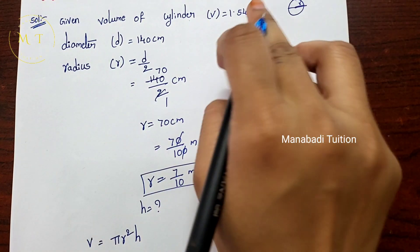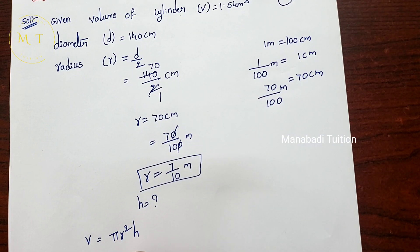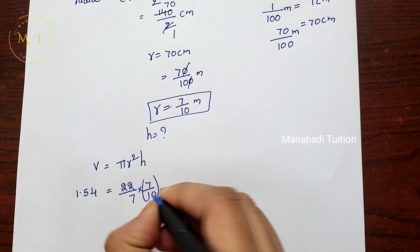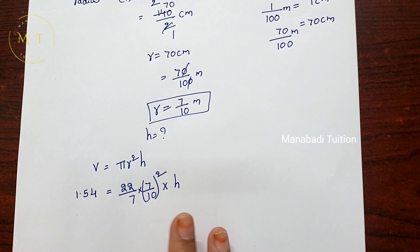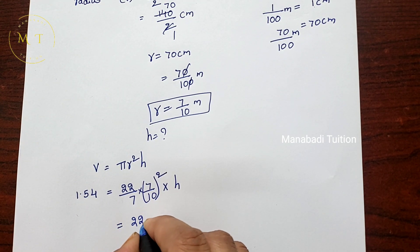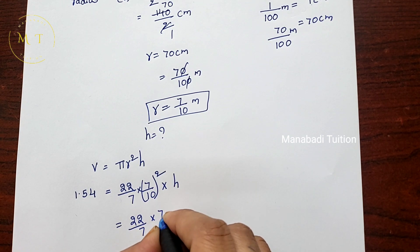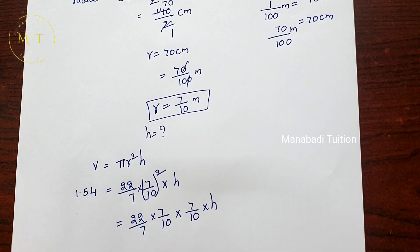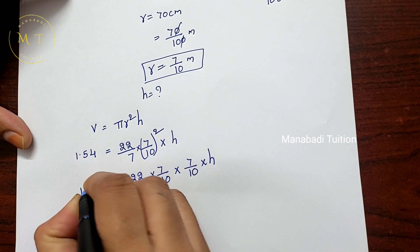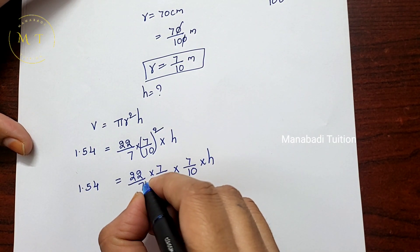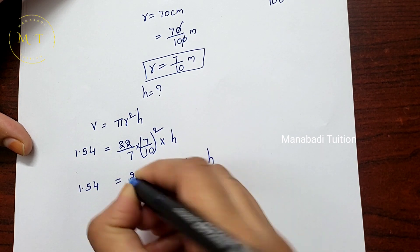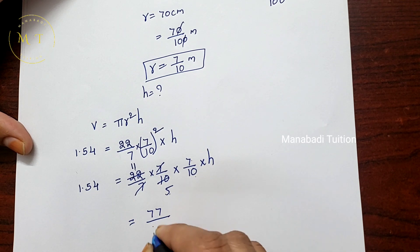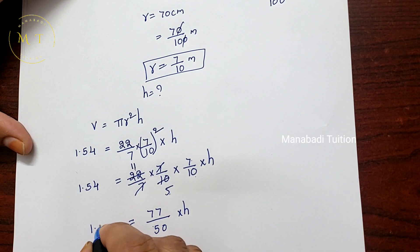So: 1.54 = (22/7) × (7/10)² × h. We square r: (7/10)² = 49/100. Substituting: 1.54 = (22/7) × (49/100) × h. We cancel 7 with 7, and simplify: left side is 1.54.